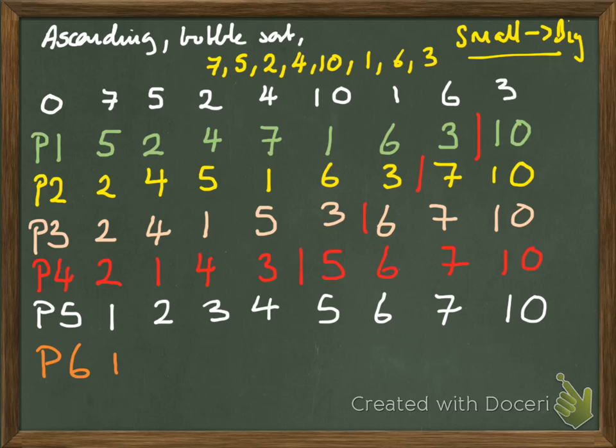Consider 1 and 2, no swap. 2 and 3, no swap. 3 and 4, no swap. 4 and 5, no swap. 5 and 6, no swap. 6 and 7, no swap. 7 and 10, no swap. That's the final pass, everybody. It's all done.